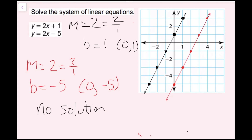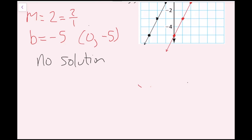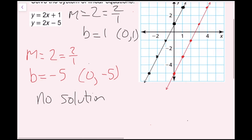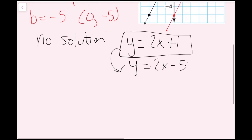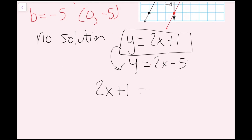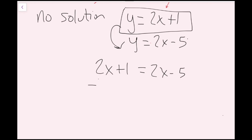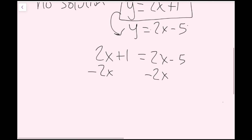Now, if you didn't have a graph or didn't want to solve by graphing, we could use substitution. Rewriting the equations: y equals 2x plus 1 and y equals 2x minus 5. When substituting, I plug one equation in for the other. Since y is alone, I plug the expression in for y, giving me 2x plus 1 equals 2x minus 5. We want to know when these y values are the same, so I subtract 2x from both sides to move the variables — but they cancel.